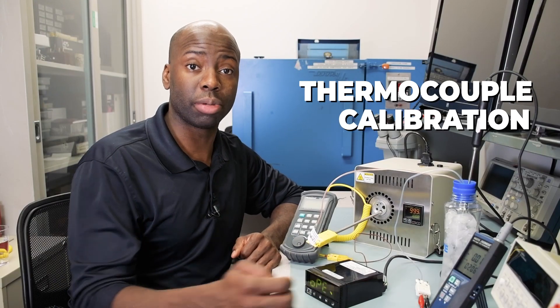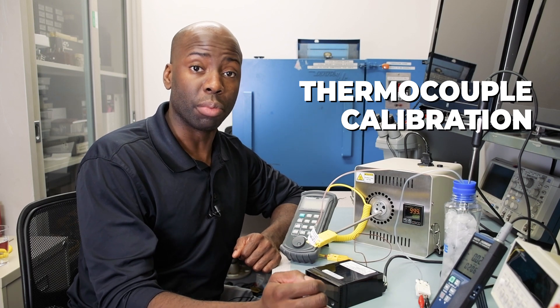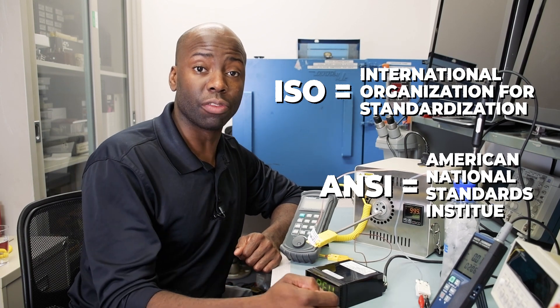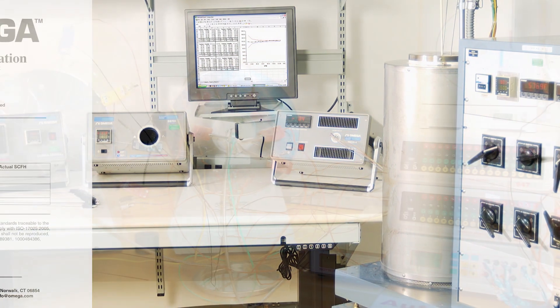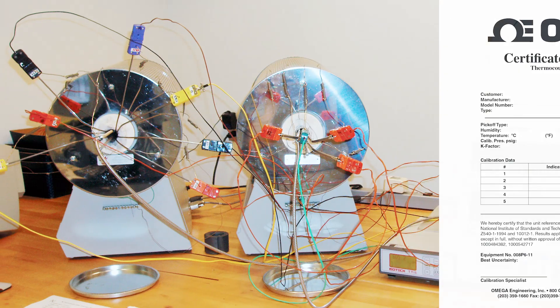Now let's talk thermocouple calibration. We know that most applications require a high level of accuracy, but if you're working within the confines of energy standards such as ISO or ANSI, any calibration of your equipment must be performed by a certified calibration lab, like Omega's New Jersey Calibration Center, that provides you with a NIST traceable calibration certificate to the calibration level that is required by your certifying body.